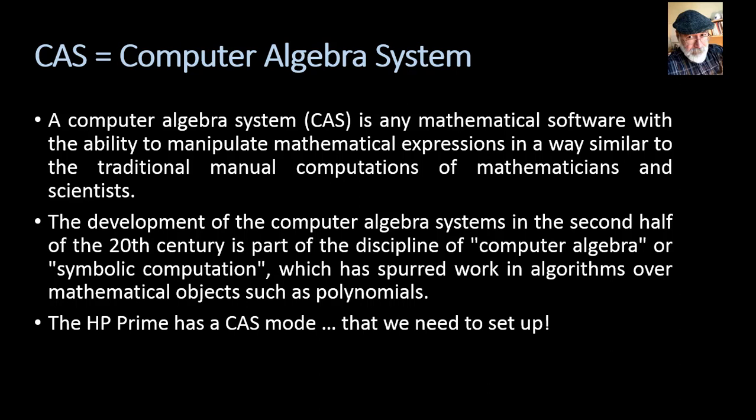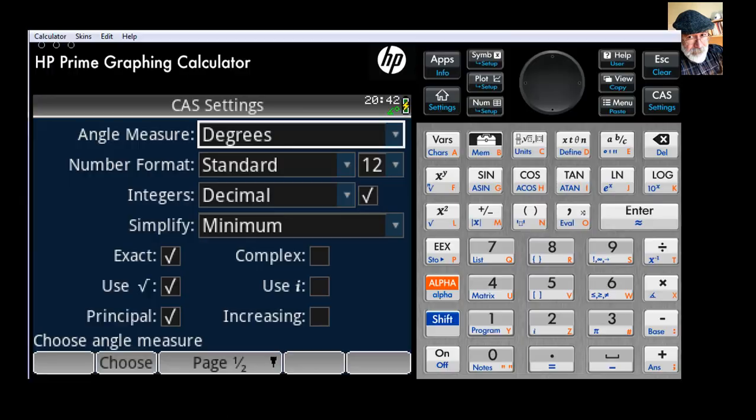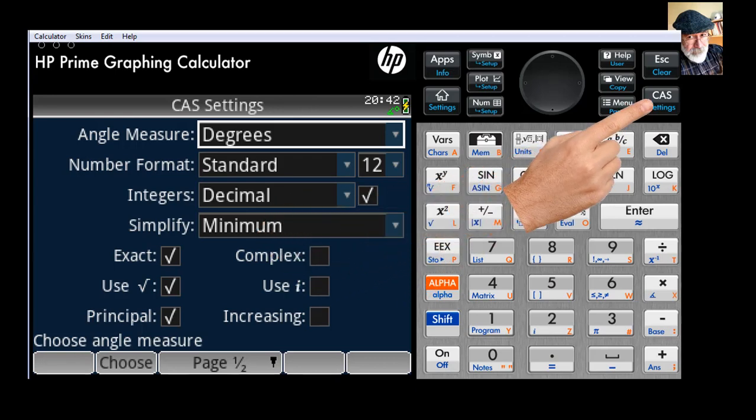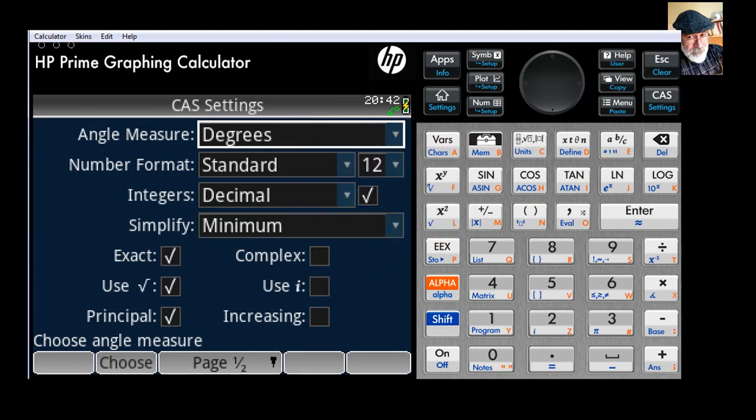The development of the computer algebra systems in the second half of the 20th century is part of a discipline called computer algebra or symbolic computation. To my students in class, I strongly advise you to take one such course. And this has spurred work in algorithms over mathematical objects such as polynomials. In the HP Prime, you find also a CAS mode, but we need to set it on before we use it. I have found that in all CAS software that I've worked with, Mathematica and Maple, and you name it, in small computers and laptops and mainframes, they always have worked better for me when I use rational numbers instead of floating-point numbers.